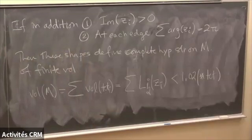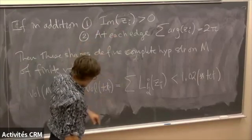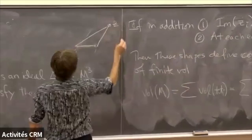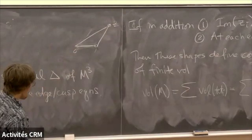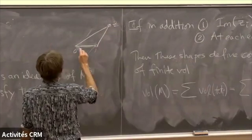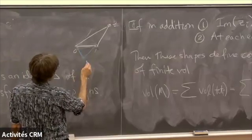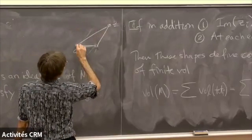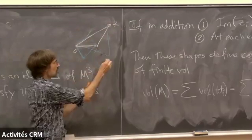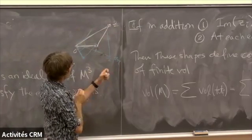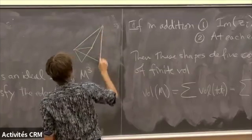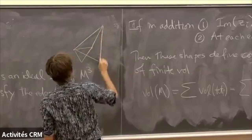The condition that the sum of arguments is exactly 2π, not 4π, rules out the case where you go around an edge multiple times. The positivity of imaginary parts rules out negative-imaginary-part shapes: if z₂ has negative imaginary part, when you develop around the edge you end up folding back, which doesn't define a good geometric structure along that edge.